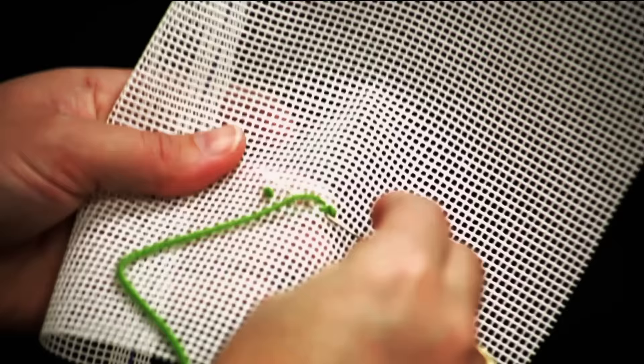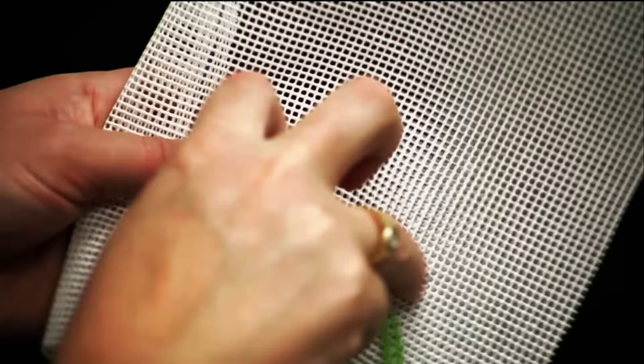Cross diagonally to the bottom right. Push the needle under two canvas threads and pull the thread completely through the canvas, simultaneously ending your Cross Stitch and beginning your next stitch.